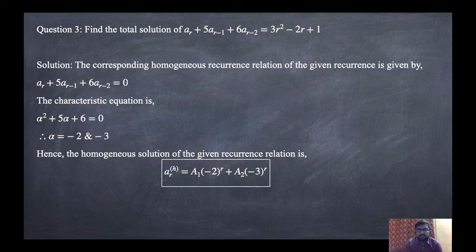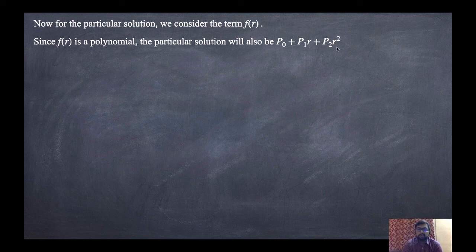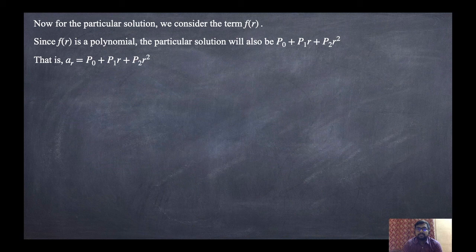The roots are distinct, so the homogeneous solution is ARH equals A1·(-2)^R plus A2·(-3)^R. For the particular solution, the right-hand side is 3R² minus 2R plus 1, a quadratic polynomial. So the particular solution takes the form AR equals P0 plus P1·R plus P2·R².